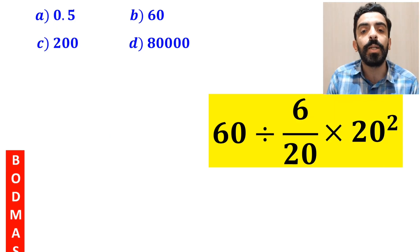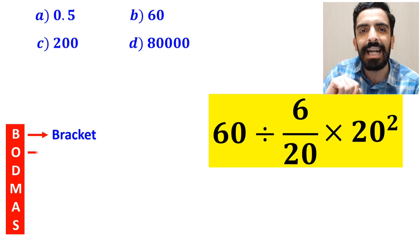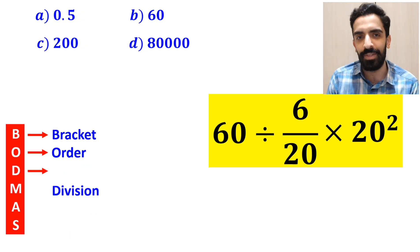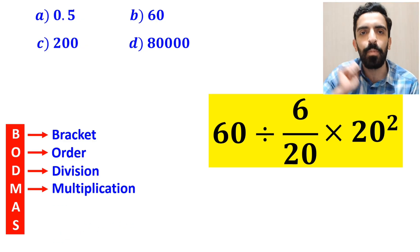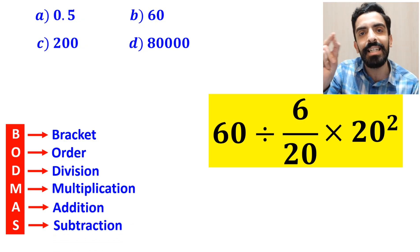To solve this question we must follow the BODMAS rule. B stands for bracket, O stands for order, D stands for division, M stands for multiplication, A stands for addition, and S stands for subtraction.